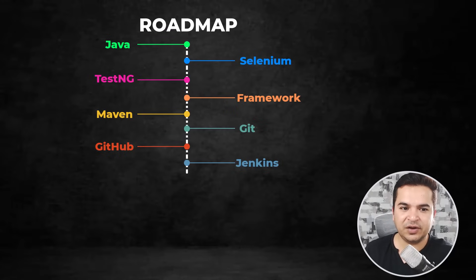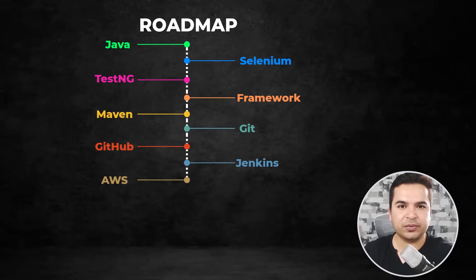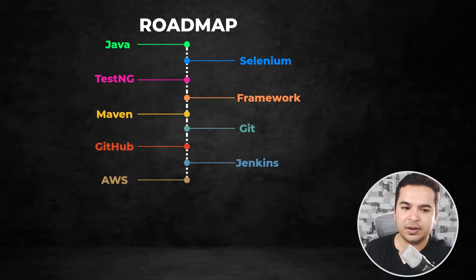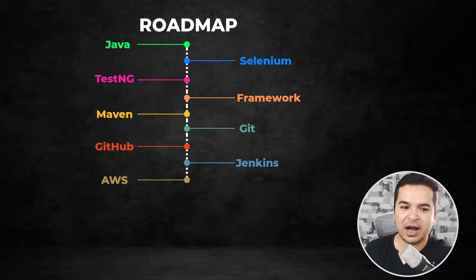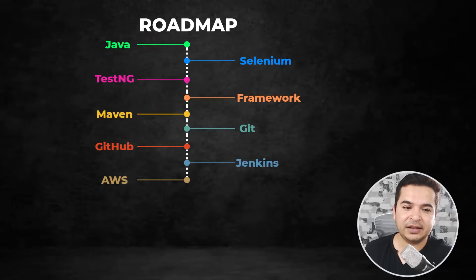Once you're comfortable, we'll move everything to the cloud. We are going to talk about AWS — how you can install Jenkins on the cloud, how you can set up your own Selenium Grid on the cloud — and then we'll create a full cloud pipeline.